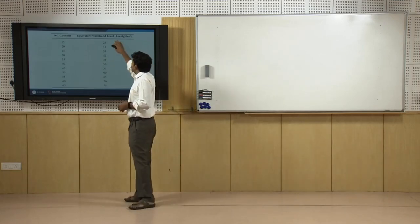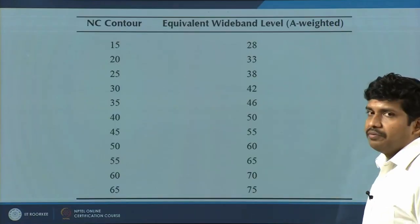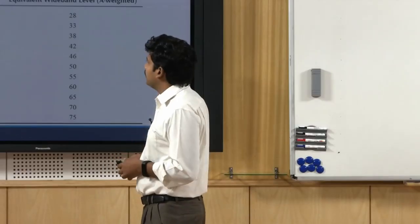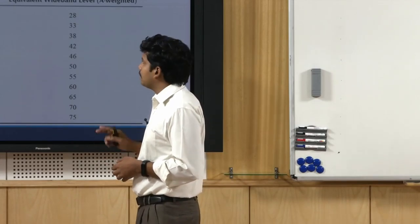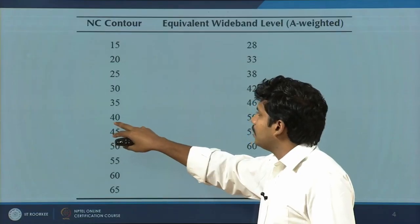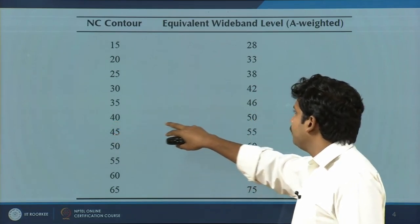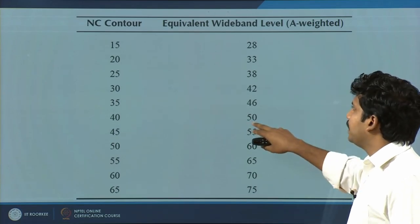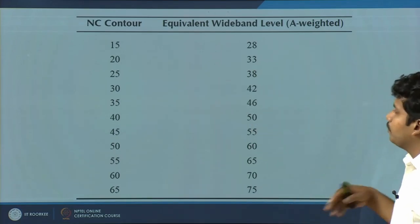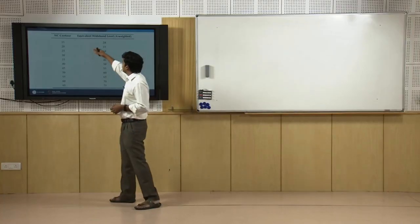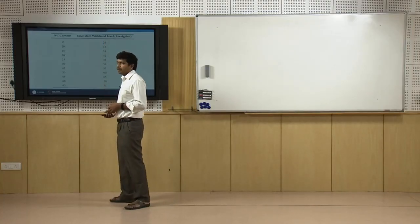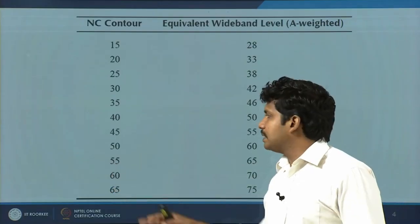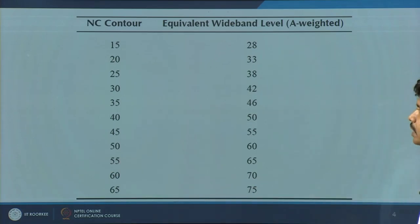Sound pressure level is easy to express in terms of A-weighted levels, which also weights to the human ear's capability of hearing. These two are comparable: for example, an NC contour of 40 is more or less equal to an A-weighted sound pressure level of 50 dB. There is a direct proportional relationship, but still a considerable difference. NC was found to be more precise in representing background noise levels in rooms.